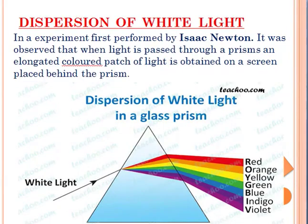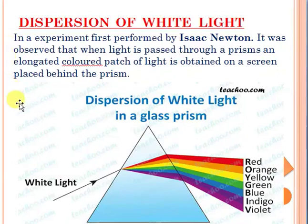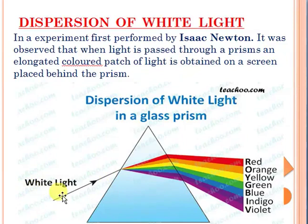According to the experiment performed by Isaac Newton, we observe that when light is passed through a prism, an elongated colored patch of white light is obtained on a screen placed behind the prism. We find out that this white light, on passing through the prism, will refract, and on refraction, we obtain an elongated color patch of light.